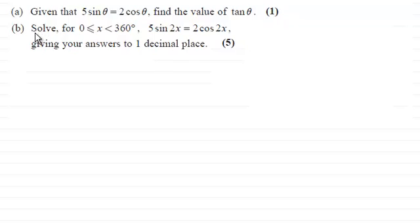In part (b), solve for 0 ≤ x < 360° the equation 5sin2x = 2cos2x, giving your answers to one decimal place for five marks.